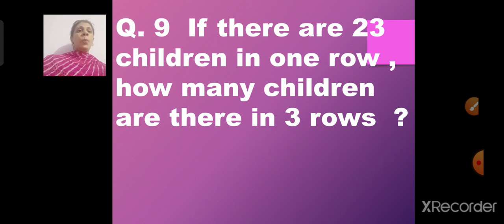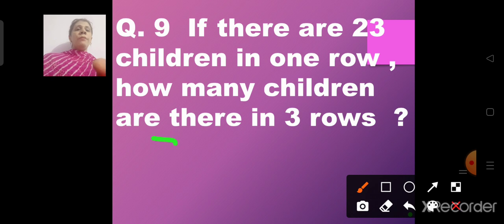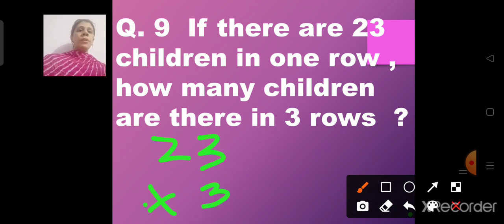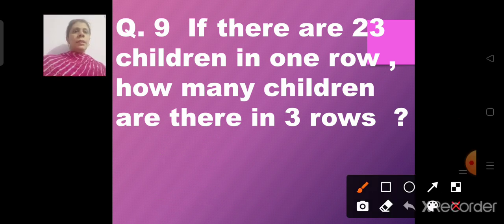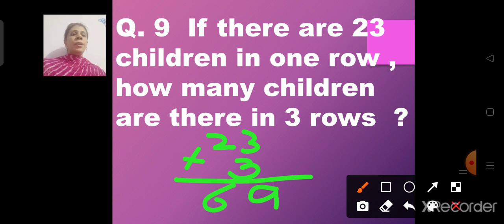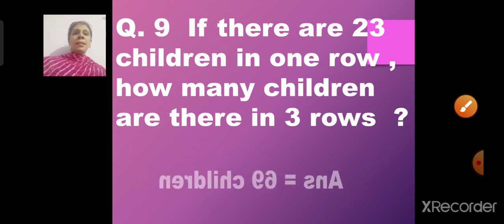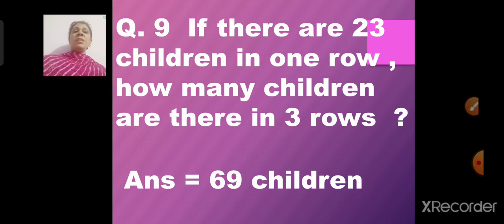Question number 9: If there are 23 children in 1 row, how many children are there in 3 rows? We multiply 23 by 3. 3 threes are 9, and 2 threes are 6, so we get 69. The answer is 69 children in 3 rows.